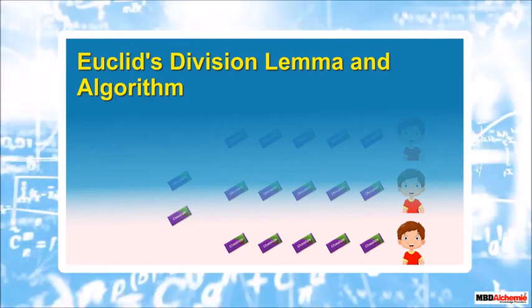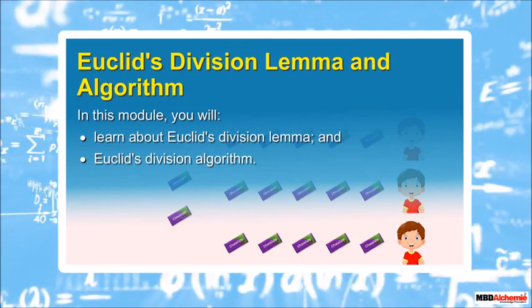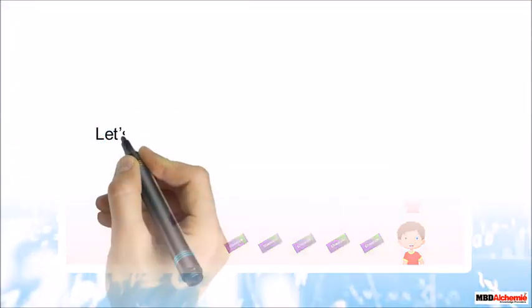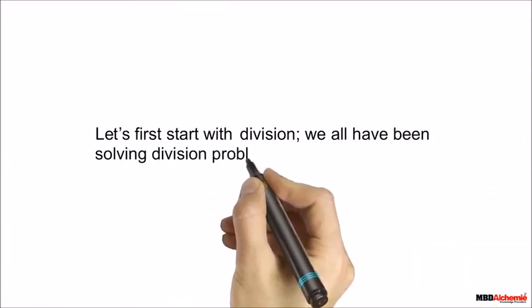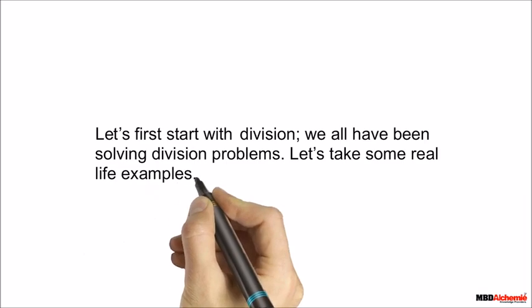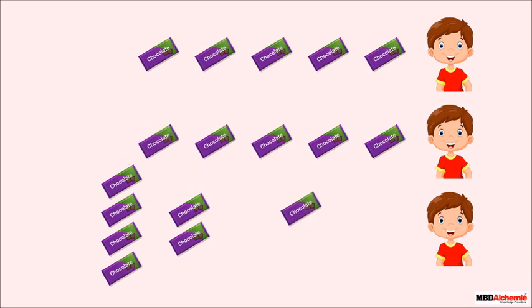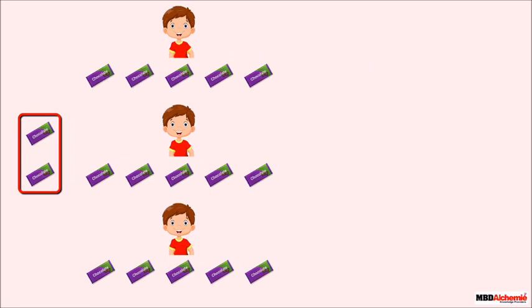In this module you will learn about Euclid's division lemma and Euclid's division algorithm. Let's first start with division. Suppose there are 17 chocolates and you have to divide them between three friends. Each will get five chocolates and two will be left out. The division statement for this can be written as: 17 = 3 × 5 + 2.